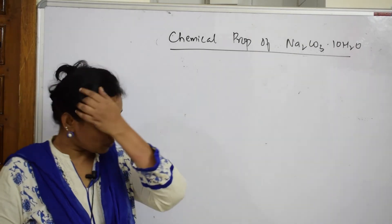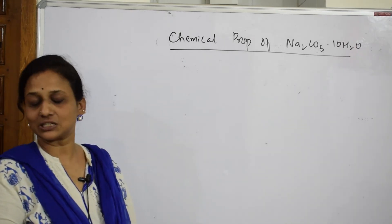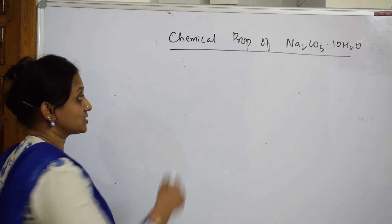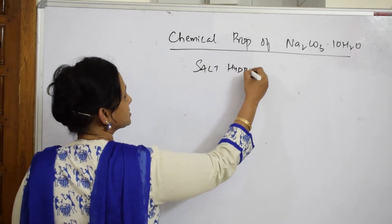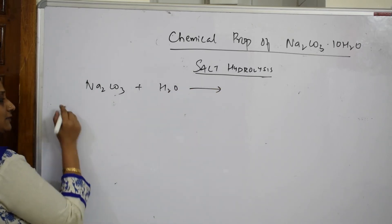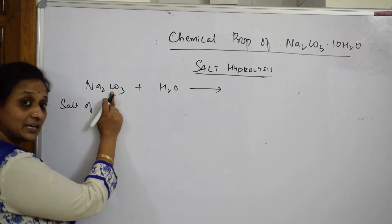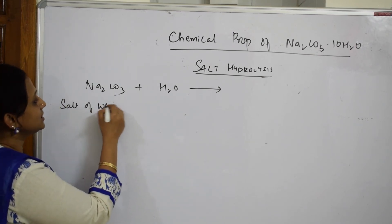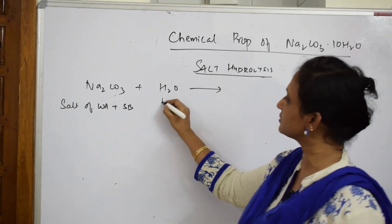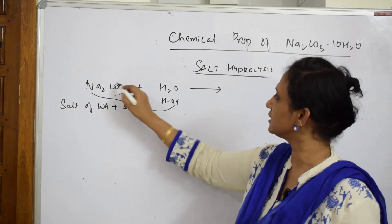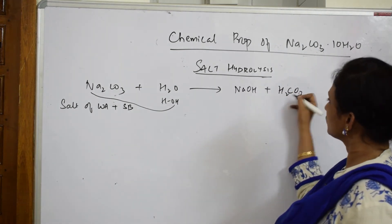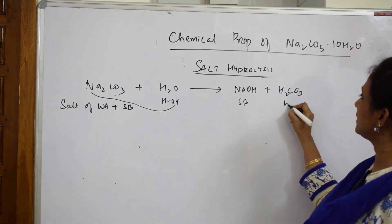For the chemical properties, sodium carbonate does not directly react with water. Instead, it reacts by a process called salt hydrolysis. Taking Na₂CO₃ with water: carbonate comes from a weak acid (carbonic acid) combined with a strong base. When combined with water (HOH), it produces sodium hydroxide (NaOH) and carbonic acid (H₂CO₃).